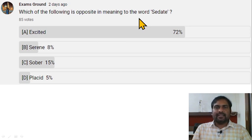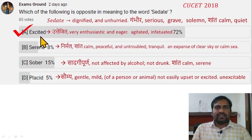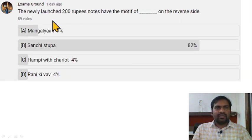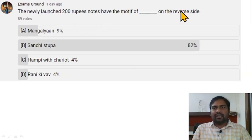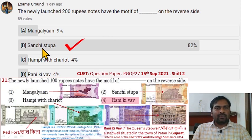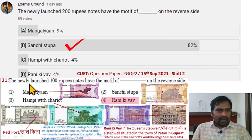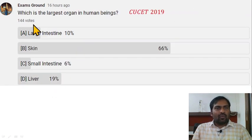The newly launched 200 rupees notes have the motif of what on the reverse side? It has a motif of Sanchi Stupa. So the question is from 2021 CUCET. In that, they asked about 100 rupees notes. The 100 rupees note has the motif of Rani ki Vav. For 200 rupees notes, it is Sanchi Stupa. For 2000 notes, Mangalyaan. For 500 notes, Lal Kila. And Hampi is on the 50 rupees note.